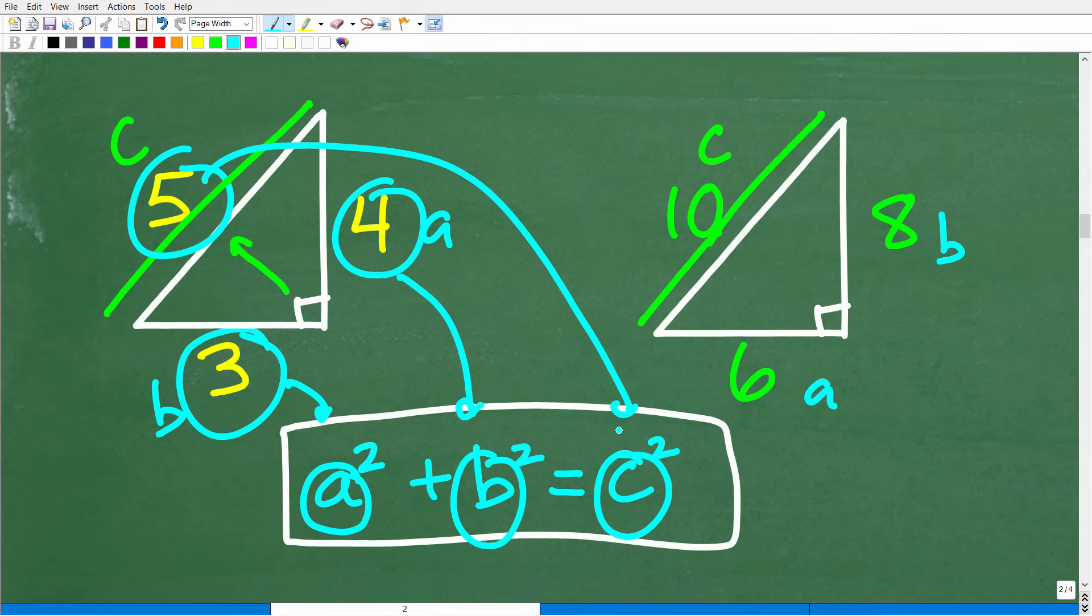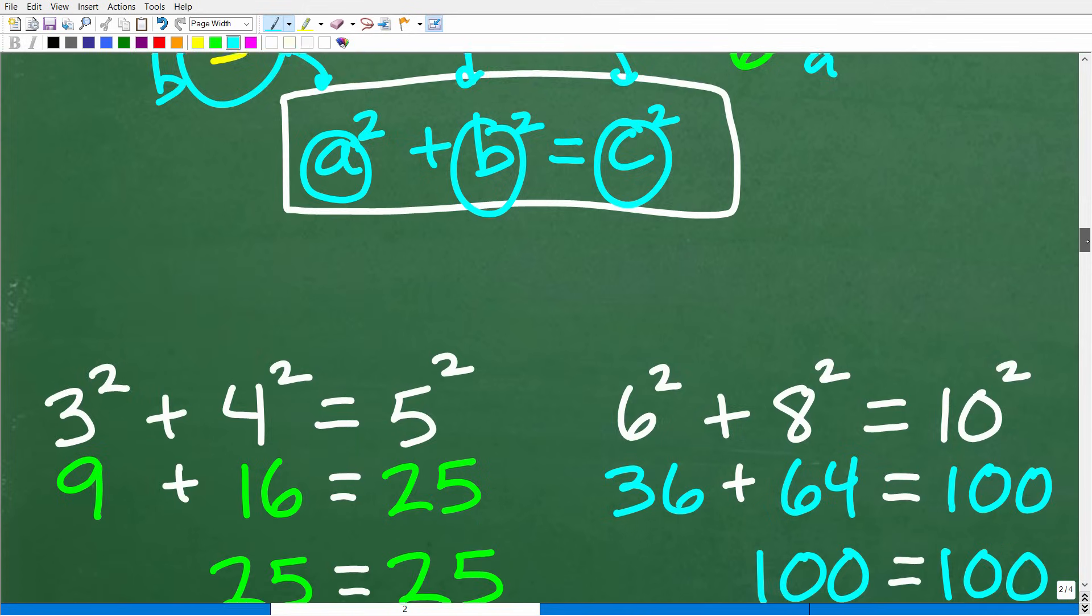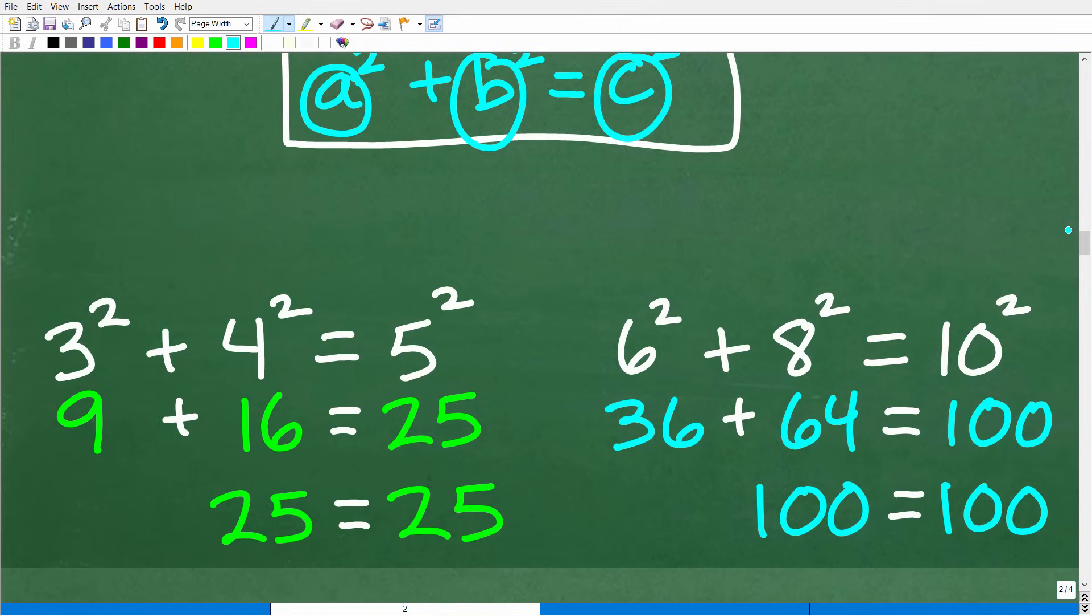So let's go ahead and check this. We'll actually do this. Three squared plus four squared. Is this actually equal to five squared? So here is the math. Three squared plus four squared is equal to five squared. So three squared, of course, is nine plus four squared is 16, and five squared is 25. Nine plus 16 is 25. 25 is equal to 25. So this checks out.